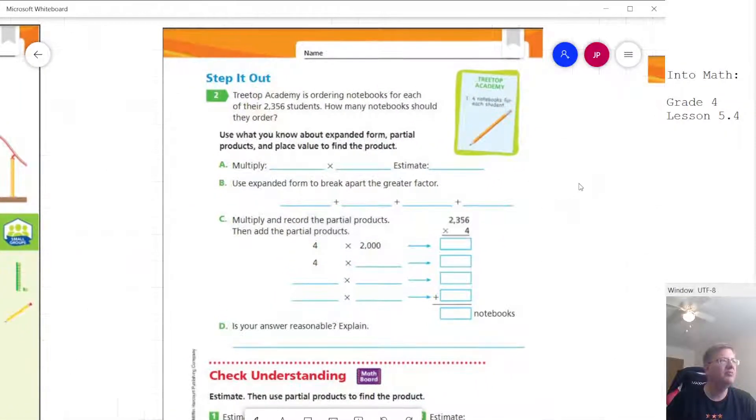To get an idea of what we're doing here, we're going to multiply. We need to figure out how many students we have times the number of notebooks. So we're going to need 4 times, and then we want to find an estimate for this. I always tell students to go to the largest place value, which is what they represent here. So we would do 4 times 2000 to get our estimate, and that would give us an estimate of 8,000.